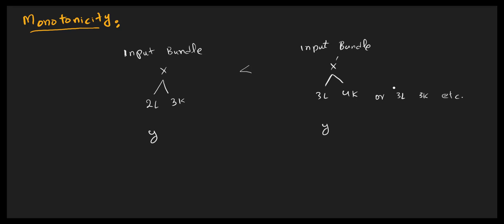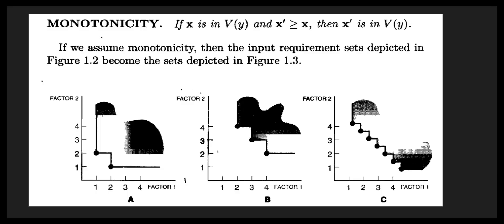This is the so-called monotonicity. Both input bundles x and x prime are in the input requirement set, meaning they are affordable and can be purchased by the producer. Formally, monotonicity can be defined as: if x is an input bundle — a vector of factor inputs — that belongs to the input requirement set to produce output y, and if x prime is greater than x, then x prime is also in the input requirement set to produce y.